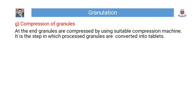Step 7 — Compression of granules: At the end, granules are compressed using a suitable compression machine. This is the step in which processed granules are converted into tablets.